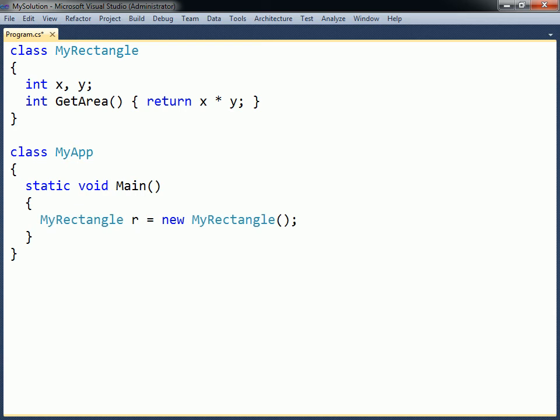This is done by using the new keyword, which will create a new object in the system's memory. An object is also called an instance. The object will contain its own set of fields, which can hold values that are different to those of other instances of the class.